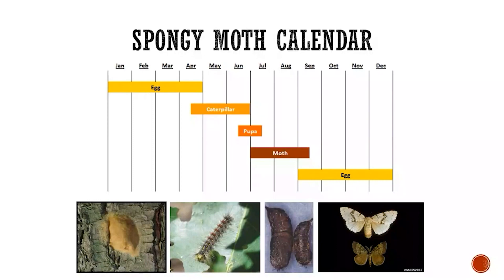which is where the spongy moth gets its common name. Beginning in mid-April in the spring, small caterpillars would emerge from the egg mass and those caterpillars will feed on foliage and continue to eat leaves and grow throughout the spring. And as they grow, they'll develop some marked coloration along their backs. As you can see in the second picture, they have six pairs of red dots and five pairs of blue dots along their back.